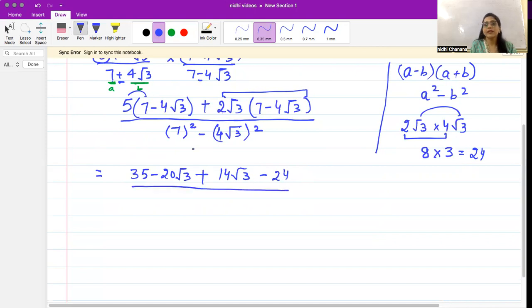Now let's move to the denominator. Denominator: 7² is 49 and the other term is (4√3)². 4√3 squared means 4√3 times 4√3. 4 times 4 is 16, √3 times √3 gives you 3, so 16 into 3 which will give you 48. Now denominator: 49 minus 48 is 1.